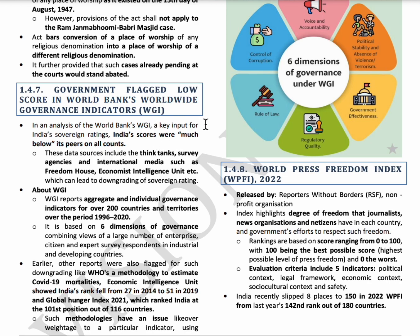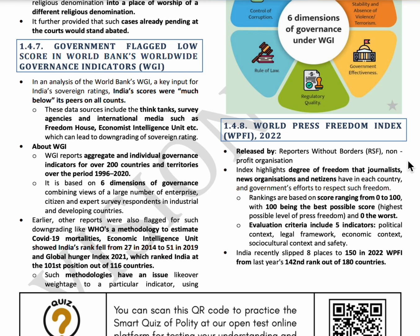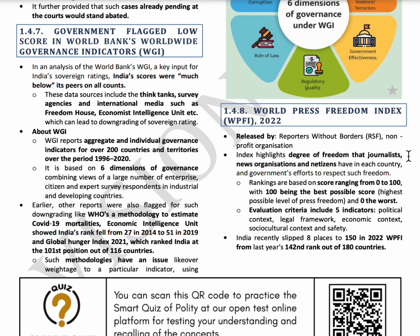The next topic is India's low score in the World Bank Worldwide Governance Indicators. India secured a rank of 101 out of 116 countries in this index. The World Press Freedom Index 2022 was released by Reporters Without Borders, a non-profit organization. The five indicators considered are political context, legal framework, economic context, social, cultural, and safety. India was ranked 142 out of 180 countries in this report.